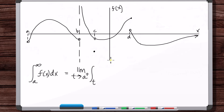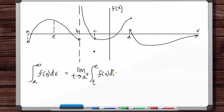So what do we do? We'll take a limit approaching b, but we already have a limit here. So what we're going to do is just pick any intermediate point — we'll call this e. Then we're going to say the limit as t approaches b from the left, going from e to t.